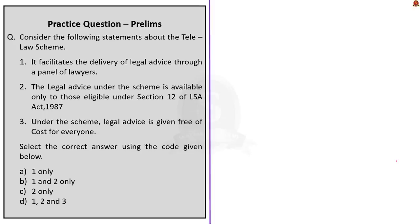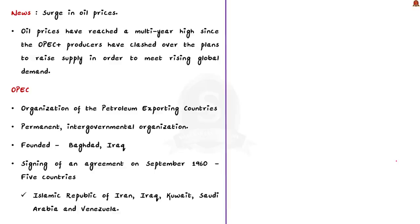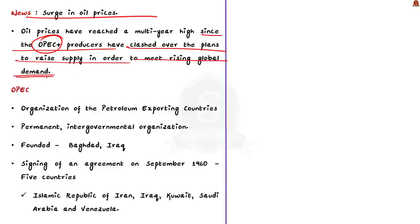These are some of the takeaway points from this article. Now let us move on to the next news discussion. This news article reports about the surge in oil prices. The news is that oil prices have reached a multi-year high since the OPEC plus producers have clashed over plans to raise supply in order to meet rising global demand. In this light, let us see some important points about OPEC and OPEC Plus.